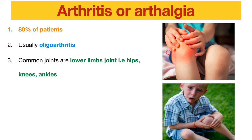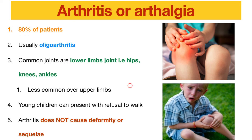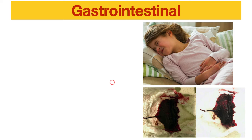The common joints affected are the lower limb joints like the hip, knee, and ankles; less commonly the upper limbs. Young children may not be able to verbalize pain but present by refusing to walk. If you see those particular rashes over the lower limbs and the child refuses to walk, think about HSP. Luckily, this arthritis does not cause deformity or any sequelae.